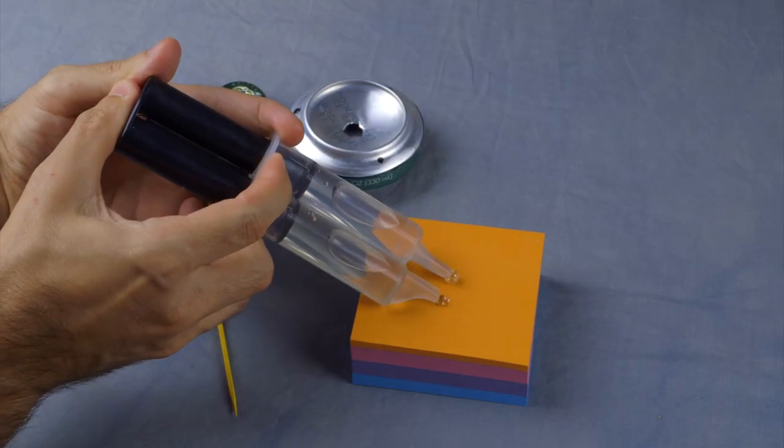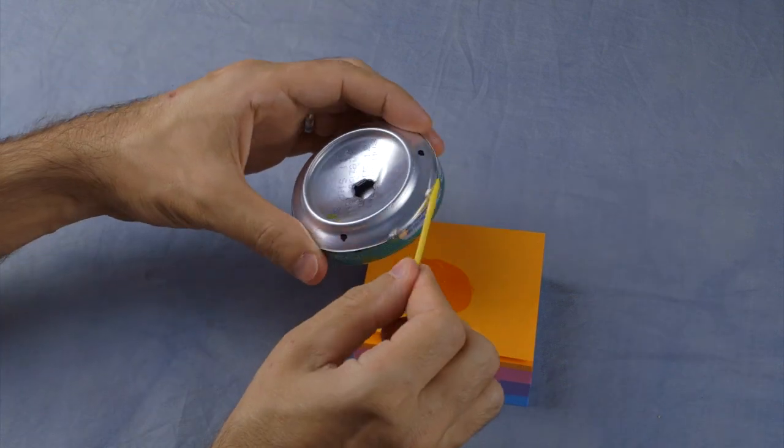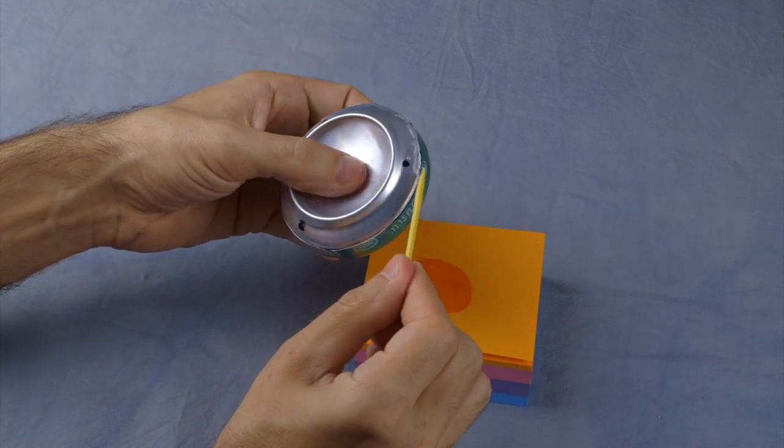Mix up a small amount of epoxy and spread a thin layer around the outer seam to ensure a watertight seal.